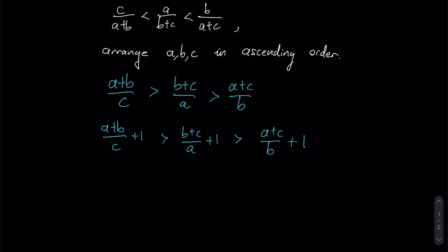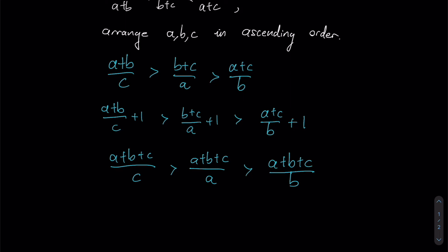Now what does adding one actually do for us? Well, adding one means for the first fraction we're actually adding c over c. So this now becomes our new fraction. For our second fraction we are essentially adding a over a, so we have a+b+c over a. This is greater than similarly a+b+c over b.